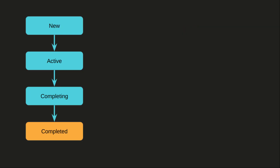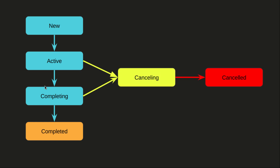Whenever we launch a new coroutine, it's going to start as 'New', then go into the 'Active' state, then 'Completing', and then 'Completed'. However, if something else happens in between, we can go to the 'Cancelling' state and then the 'Cancelled' state. We must understand how to cancel them and how to deal with whenever a coroutine is cancelled.